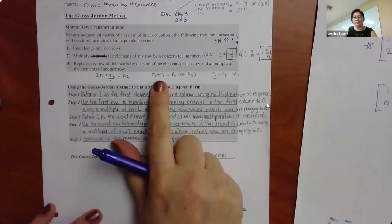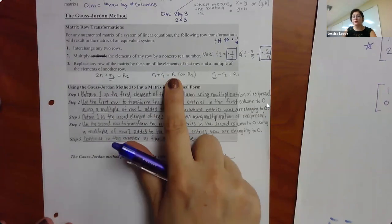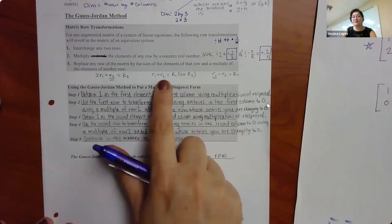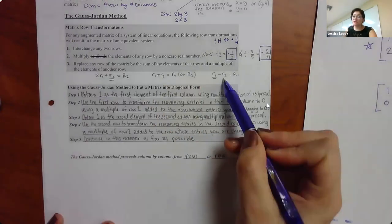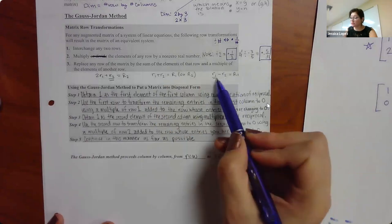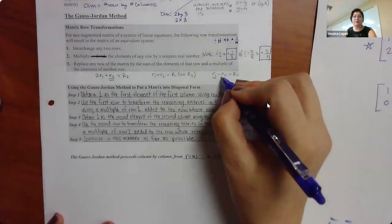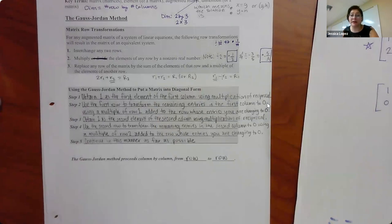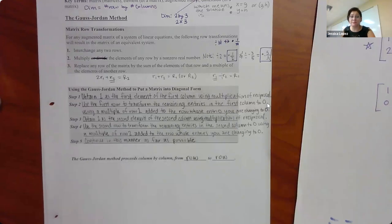If it says row one plus row two and neither one is getting multiplied by something, then you have the choice to replace either row one or row two. But if one of them has a coefficient — even an invisible negative one — that one is getting multiplied, so you cannot replace it. You would have to replace the other row, the one that did not get multiplied by anything.